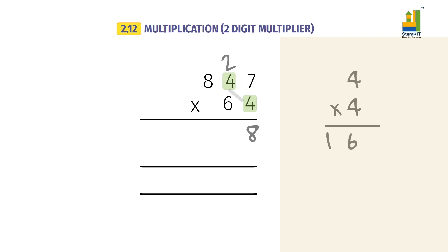4 into 4 equals 16. Add plus 2 carry over from the previous multiplication. Gets us 18. Write 8 and carry over 1.